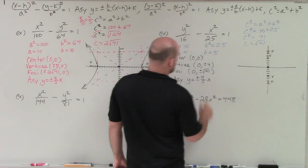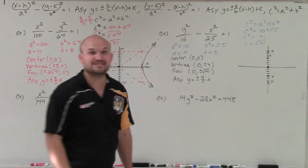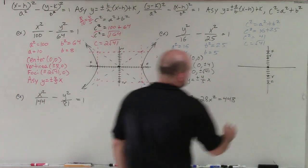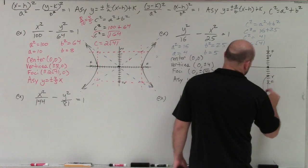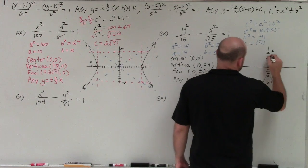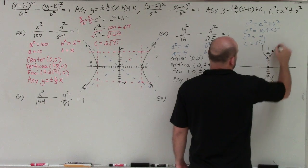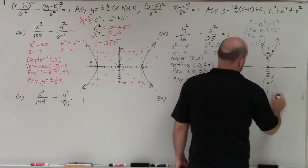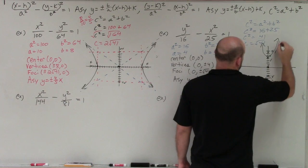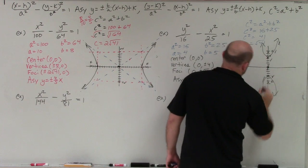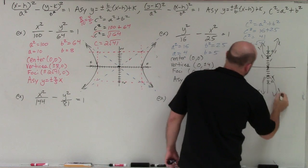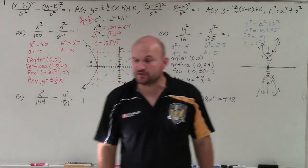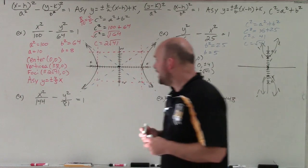For the asymptote of this vertical hyperbola, since it's a over b instead of b over a, I plug in: plus or minus a over b times x, which is 4 fifths times x. So the asymptotes are y equals plus or minus 4 fifths x. And if you wanted to sketch it, remember the asymptotes are part of the graph.